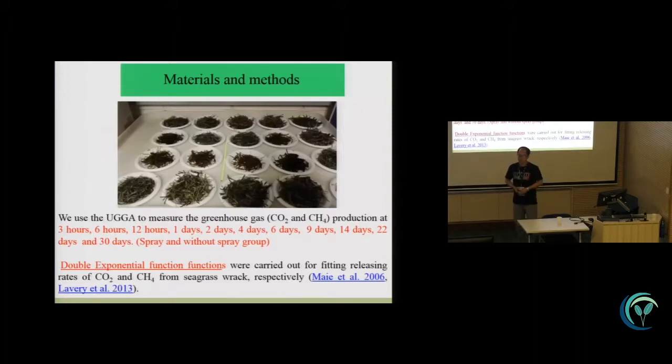We collected the seagrass wrack from the beach and we did the laboratory experiment for one month. We sampled 11 times to do the experiment, and we also use the spray to create the wet condition. When we got the data, we used the double exponential function to do the simulation analysis. Because the seagrass wrack composition divides into two phases: the first phase is the leaching phase, the second phase is the microbial breakdown of the seagrass litter.